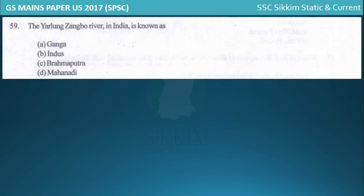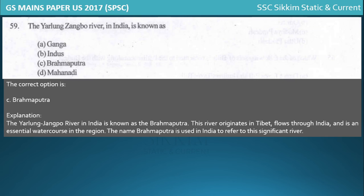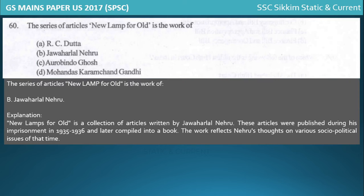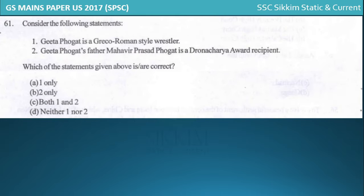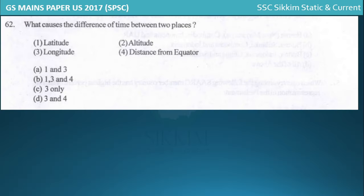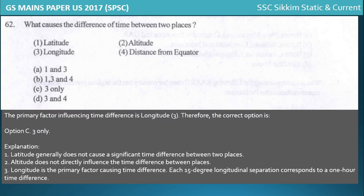The Yarlung Tsangpo River in Tibet enters India in the northeast and becomes the Brahmaputra River, flowing through Assam. 'New Lamp for Old' was a series of articles by Jawaharlal Nehru. Geeta Phogat is a wrestler - she is a freestyle wrestler, not Greco-Roman style as stated in one option, and Mahavir Prasad Phogat trained her. The difference in time between two places is determined by longitude - each 15-degree longitudinal separation equals one hour of time difference.